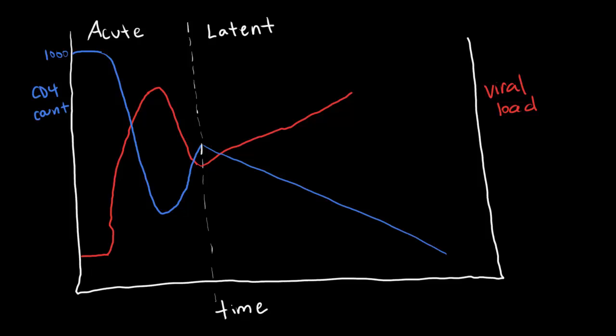And when the CD4 levels fall below 200, that is when the person is said to have AIDS. And at this point, the viral load will increase much more rapidly. And the first thing we'll see are constitutional symptoms.